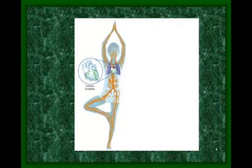Here's a diagram showing each type of circulation: coronary in the heart, pulmonary in the lungs, and systemic through the body.